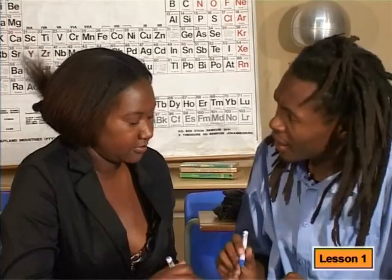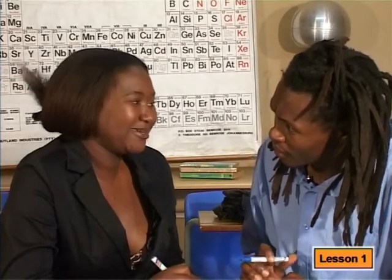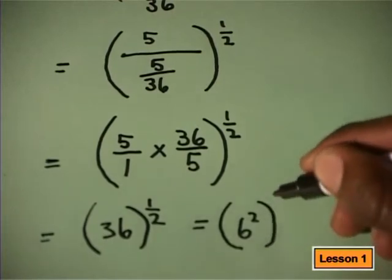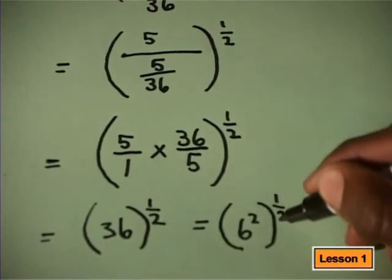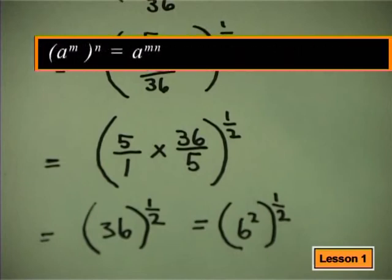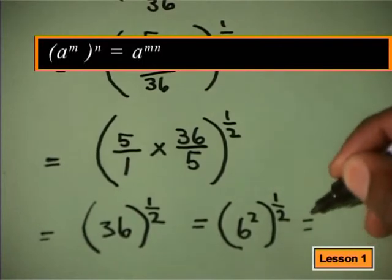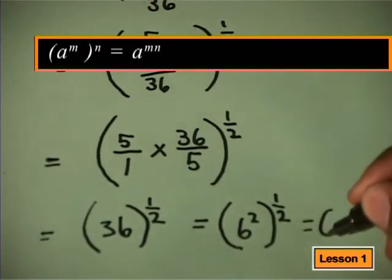I think I can simplify this even further. Go ahead. 36 is the same as 6 squared. Now one of the laws say if we raise a power to a power, we multiply the powers. Here that would be 2 times half, which is equal to 1, which leaves us with 6.